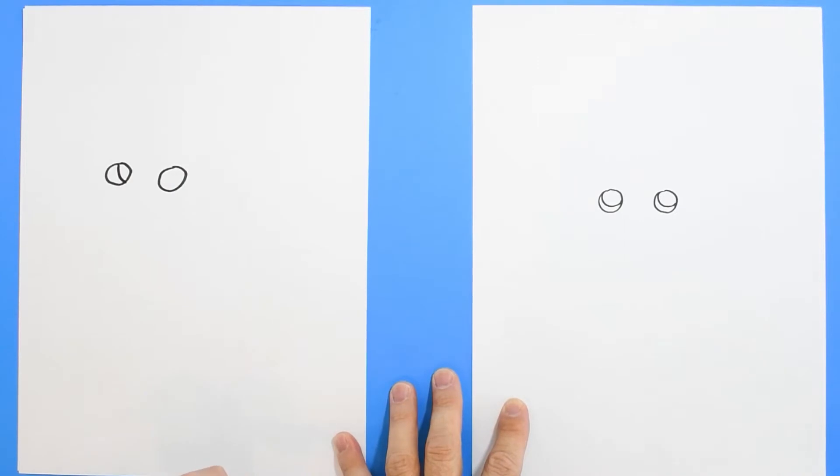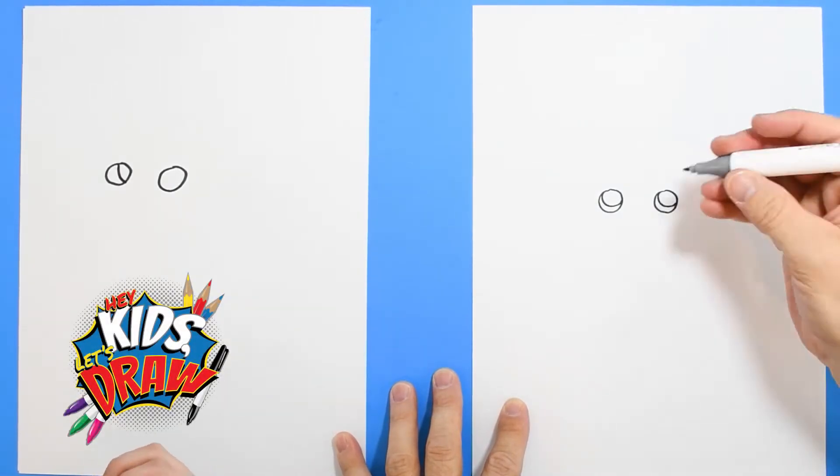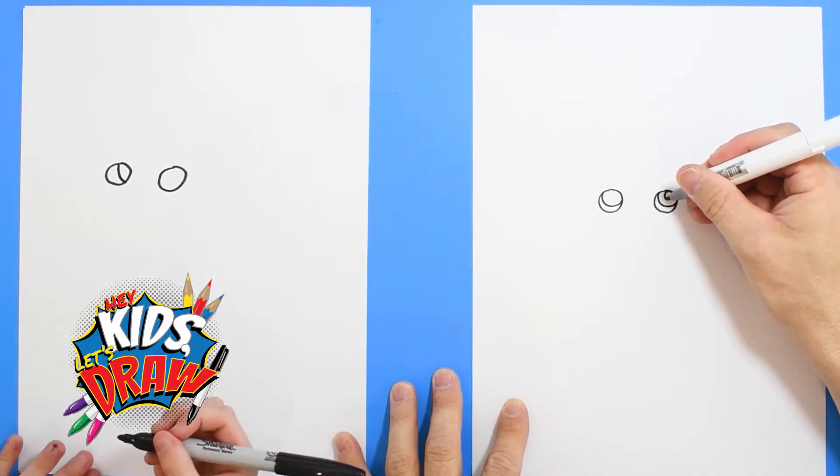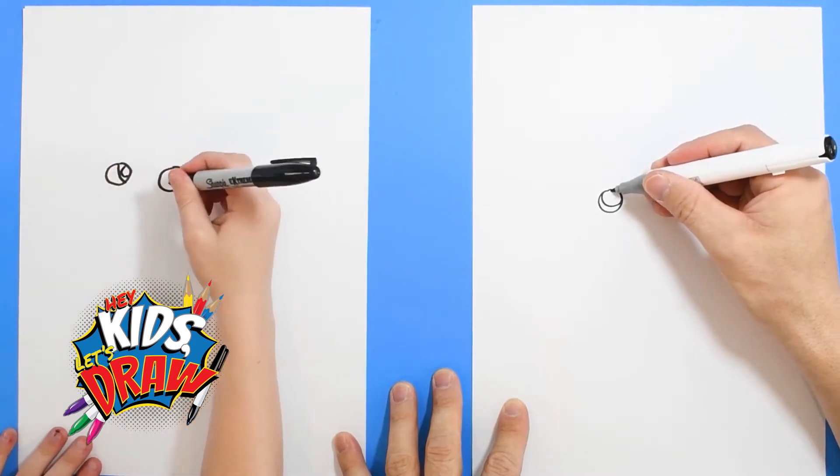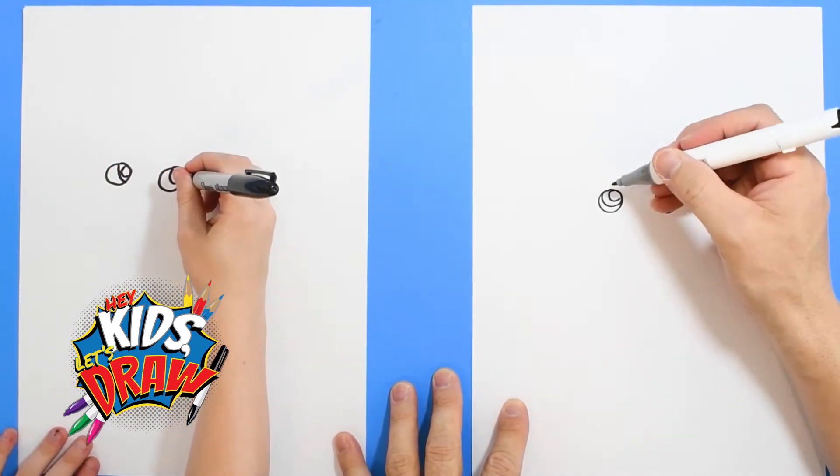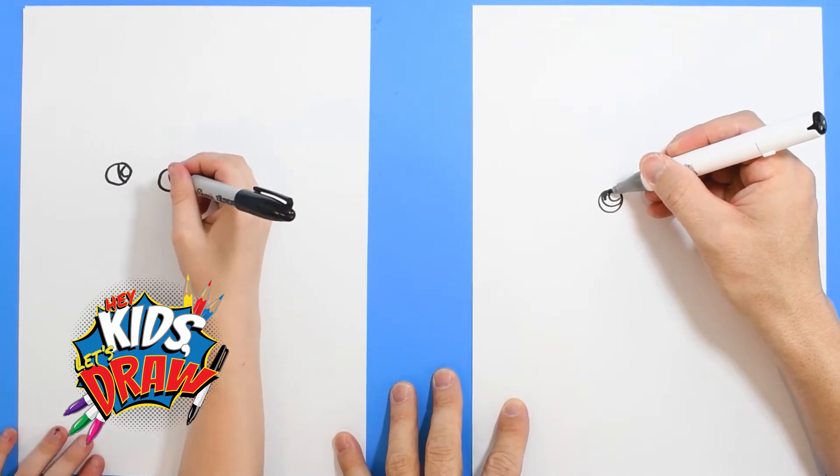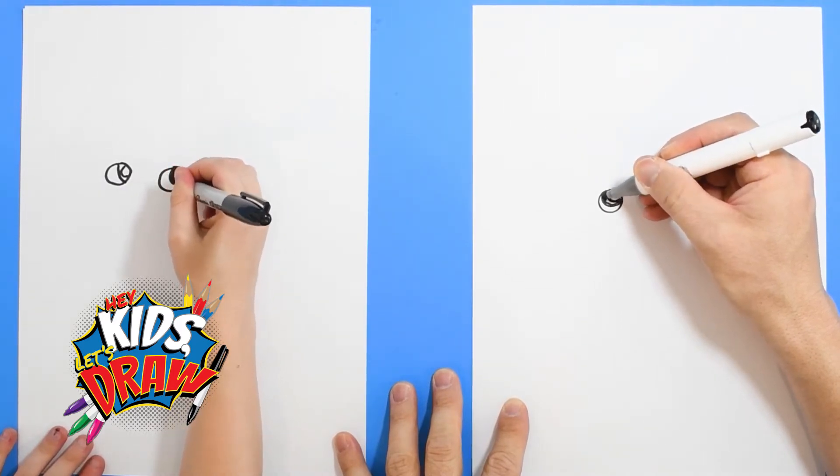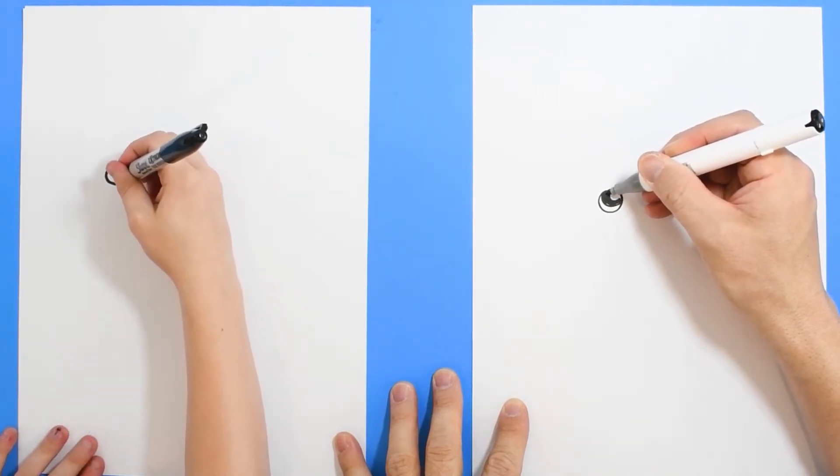Inside the eye we're going to draw another big circle and another big circle. These are going to be the eyes. We'll do a highlight in the eye right there, and we're going to color this part black.